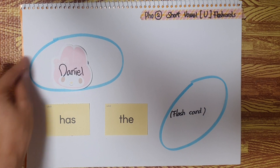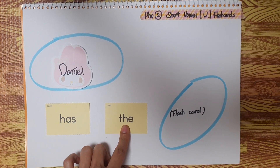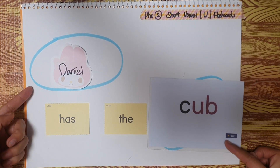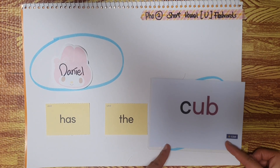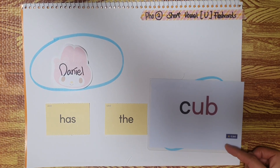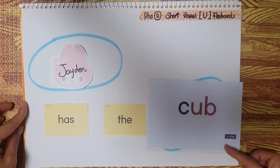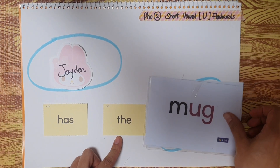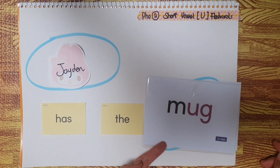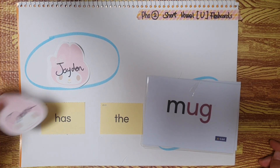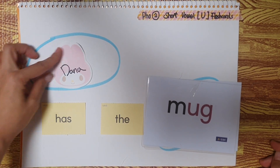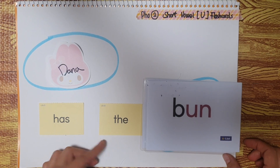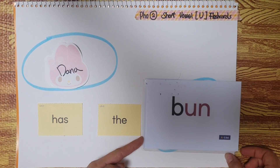Daniel has the cub. Daniel has the cub. Jaden has the mug. Jaden has the mug. Dana has the bun. Dana has the bun.